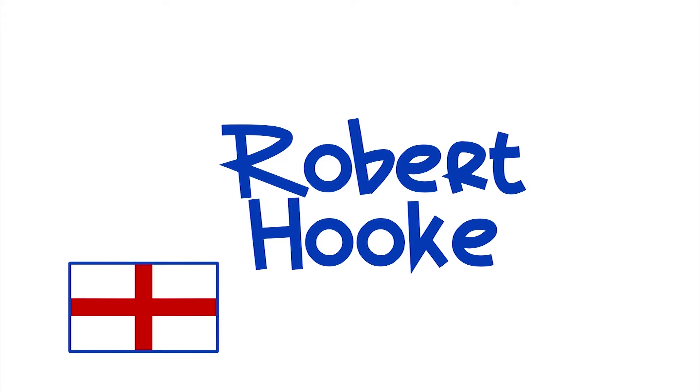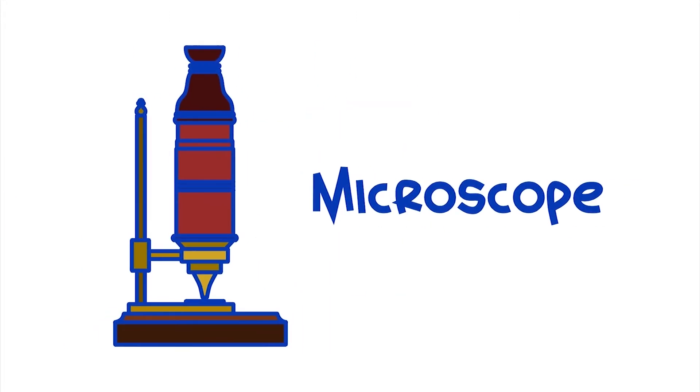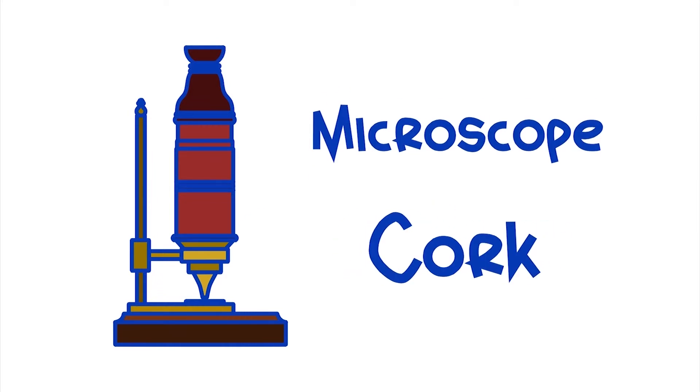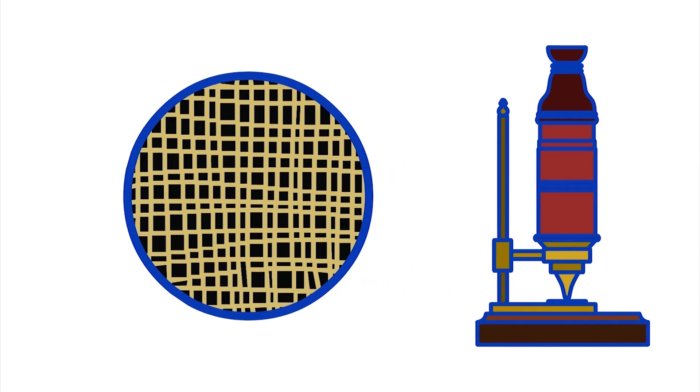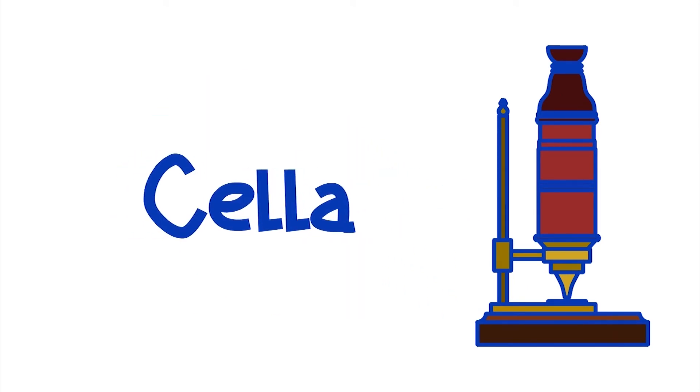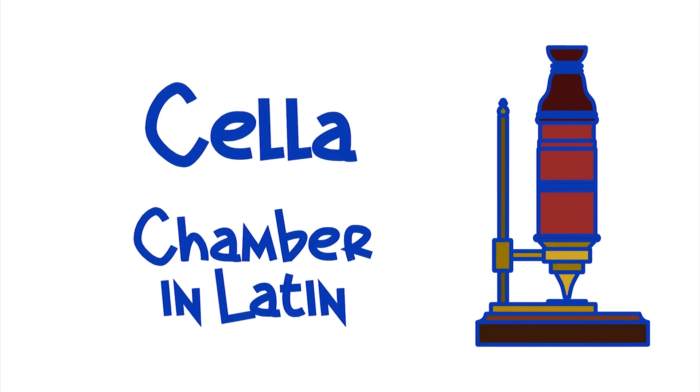The name cell was first used by an English scientist named Robert Hooke. Through a microscope he was observing fine cuts of cork, which is a bark of a tree type. Hooke saw that the cork formed small compartments that he called cella, which means chamber in Latin.